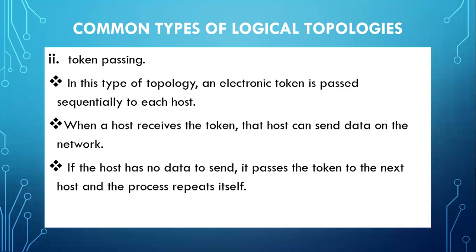The second type of logical topology is token passing. In this topology, an electronic token is passed sequentially to each host within the network. When a host receives the token, that host can send data on the network. If a host has no data to send, it passes the token to the next host, and the process repeats.